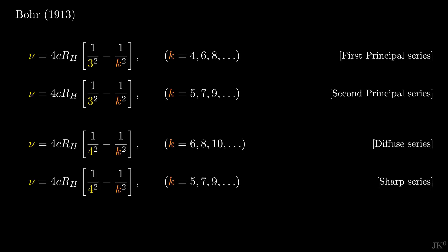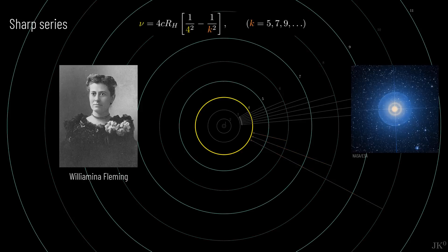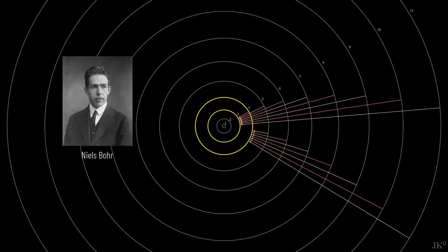I invite you to repeat the same procedure with the other two Fowler's formulas. You will find again that they will be described by Bohr's model with z equals 2 but n1 equals 4. The so-called diffuse series correspond to transitions from even levels down to the fourth level, whereas the sharp series, these are the lines discovered by Fleming in Zeta Puppis, correspond to transitions from odd levels down to the fourth level.